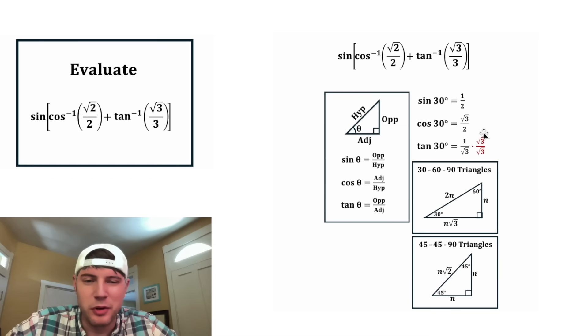On top, the one times the square root of three is square root of three. And on bottom, square root of three times square root of three is square root of nine, which is equal to three. So now we have the fully simplified sine, cosine, and tangent of 30 degrees.